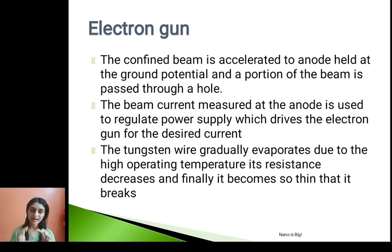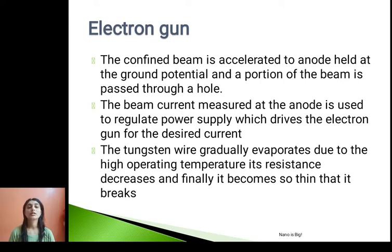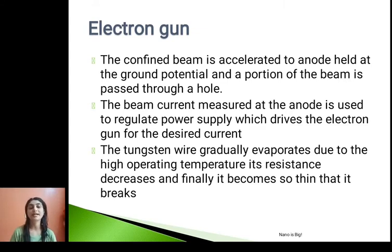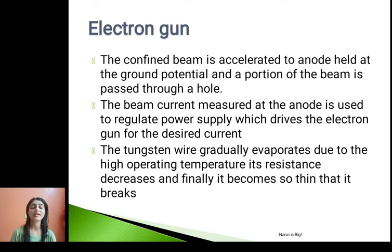The confined beam is then accelerated towards the anode, which is held at ground potential, and a portion of the beam is passed through a hole. The beam current measured at the anode is used to regulate the power supply which drives the electron gun at the desired current. The tungsten wire gradually evaporates due to the high operating temperature; its resistance decreases and finally it becomes so thin that it breaks.